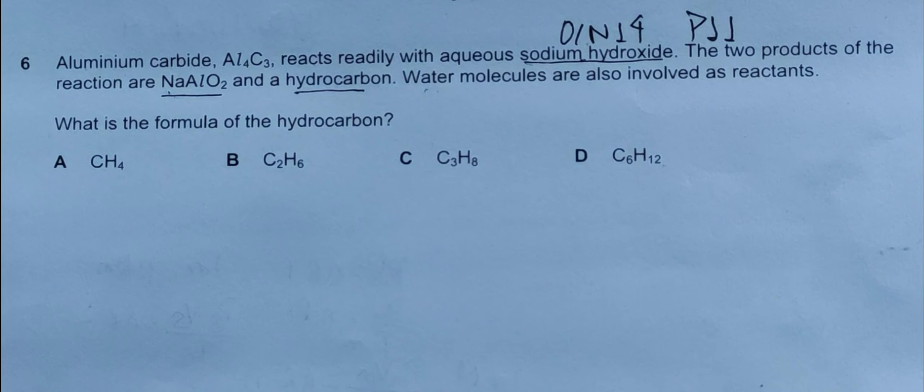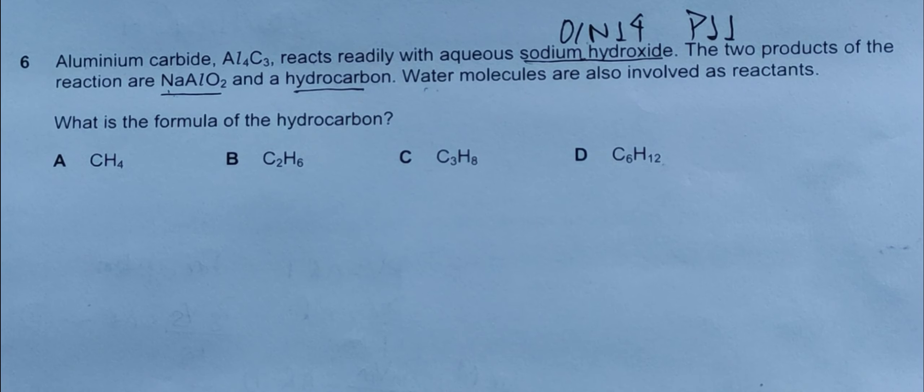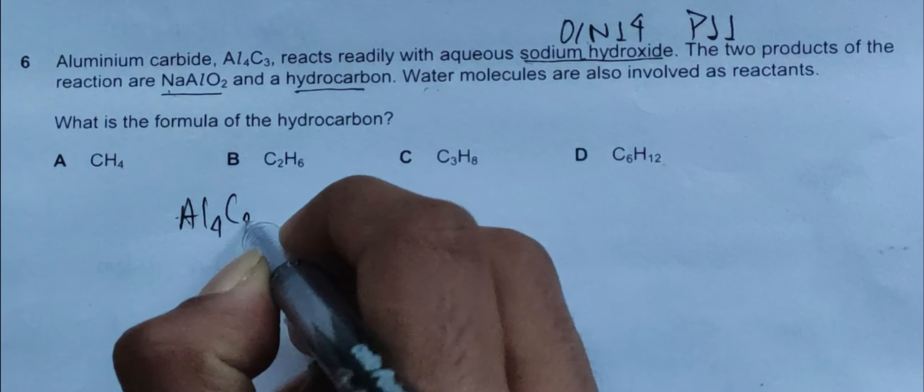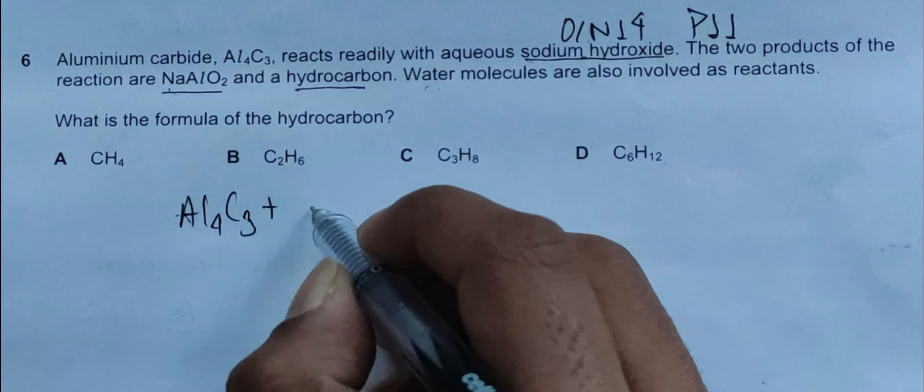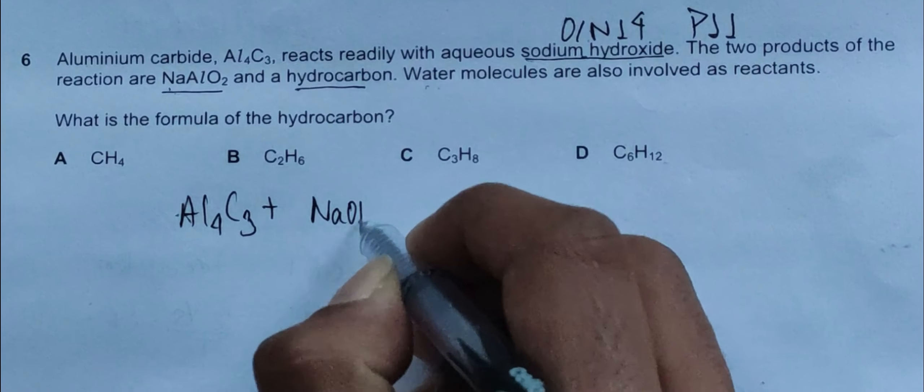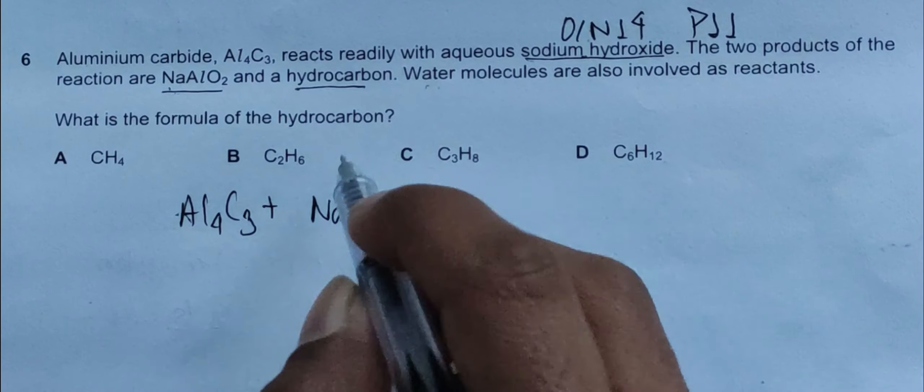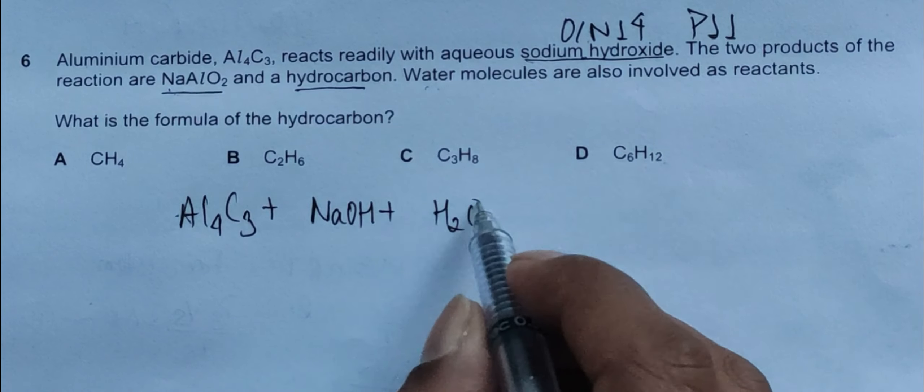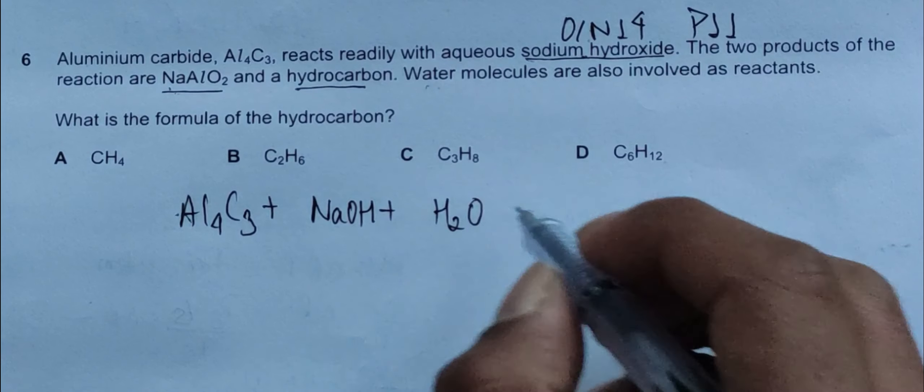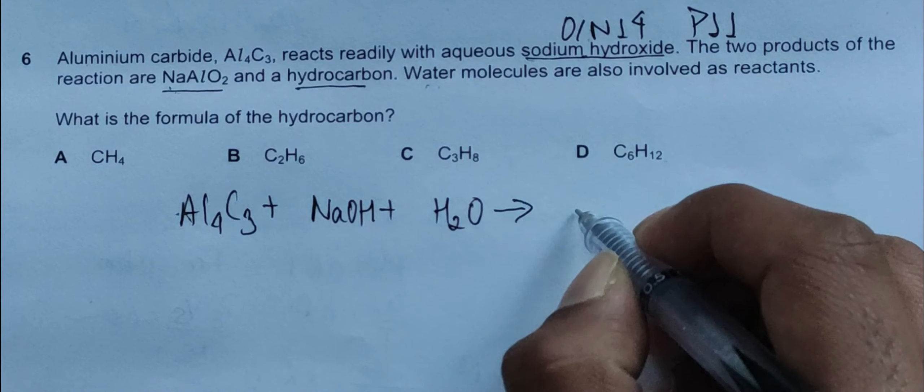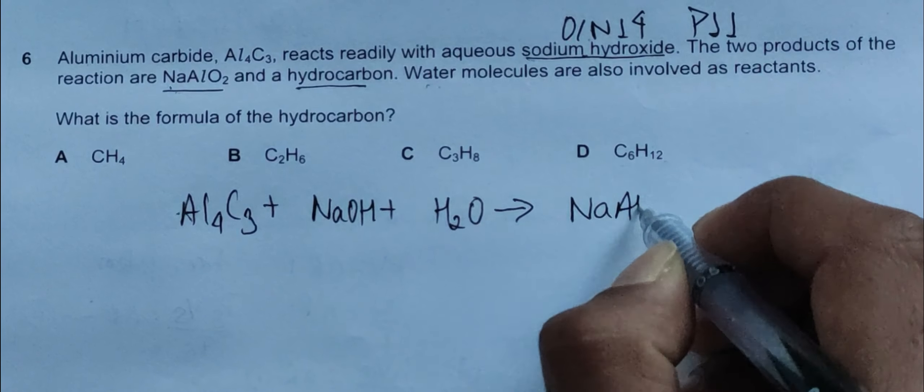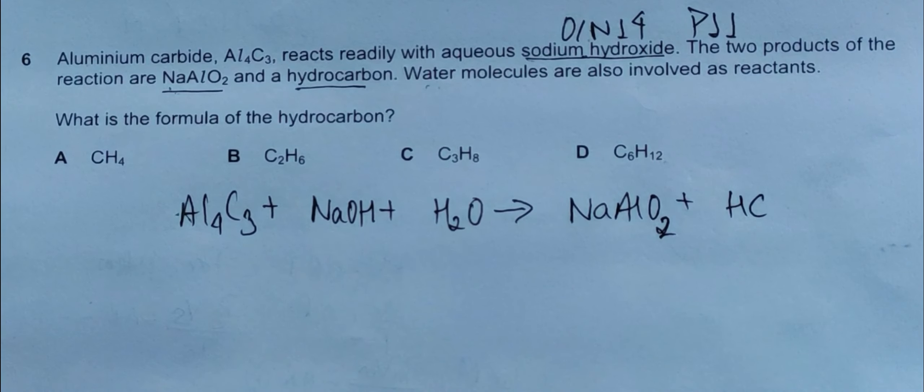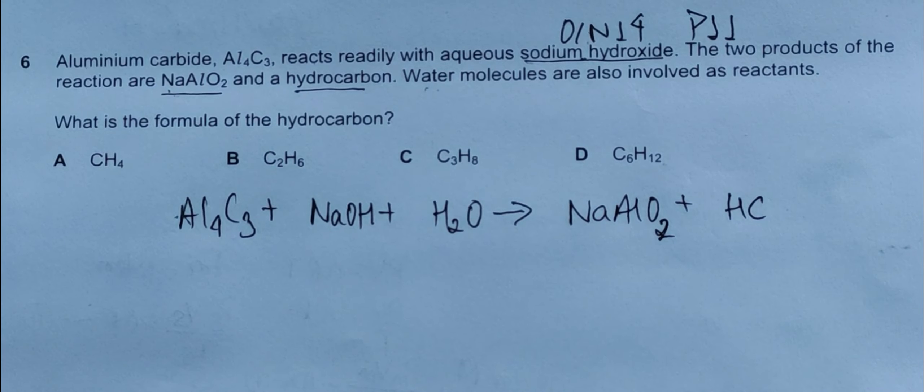First, as usual, let's construct an equation. Our equation will be Al4C3 plus sodium hydroxide NaOH, and water molecules are also involved as reactants H2O. This space is for balancing the equations. Our products are NaAlO2 and hydrocarbon. We'll just write it as HC and later deduce what it is.